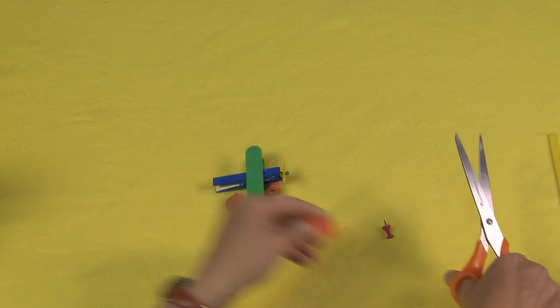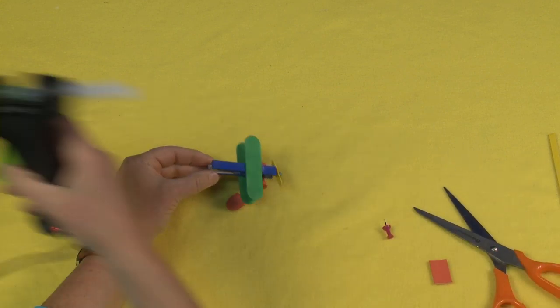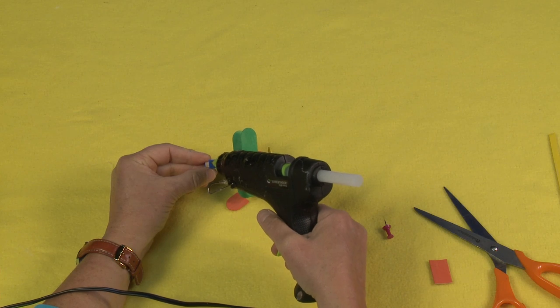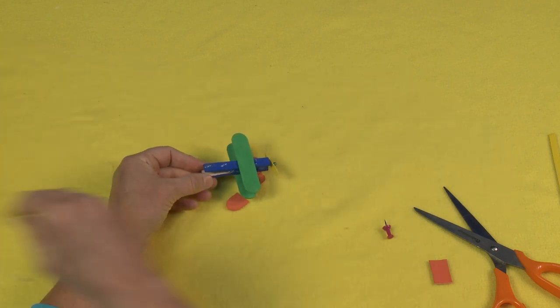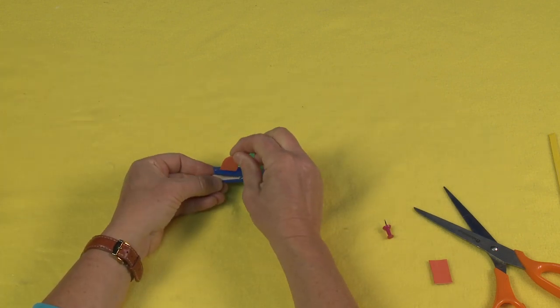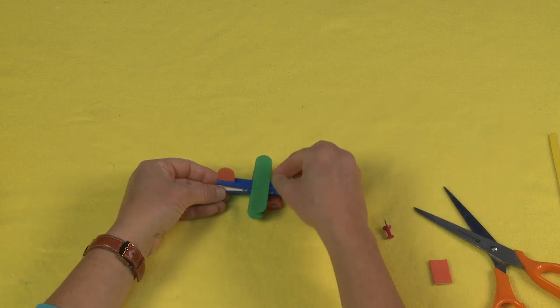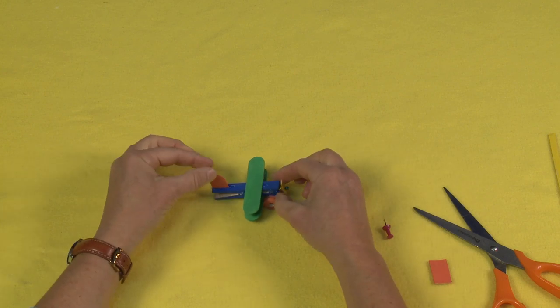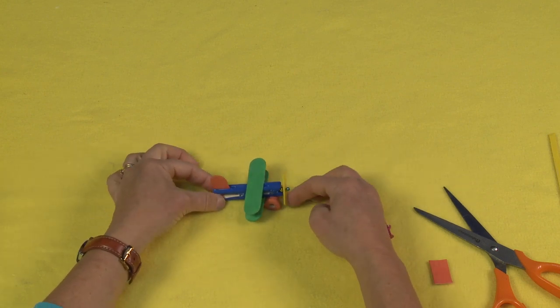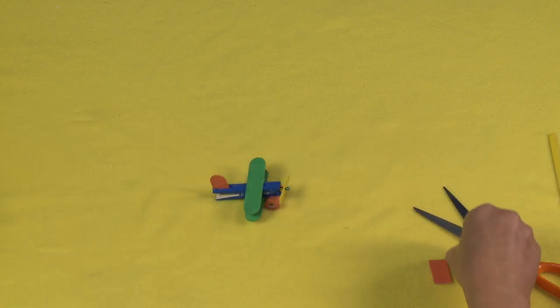And then put a little line of glue right here and stand this up so that it makes its little airplane tail. And then you can see that spins and the tail is up.